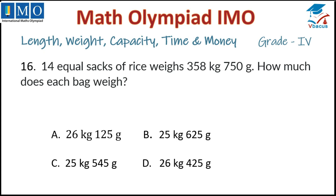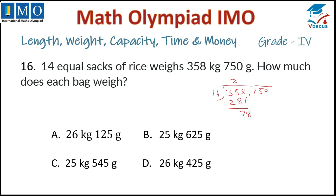Question number 16: 14 equal sacks of rice weigh 358 kg 750 grams. How much does each bag weigh? According to the question, we have to divide 358 kg 750 grams by 14 because it is divided into 14 equal sacks. Let us divide 358, insert decimal and write 750, then divide by 14.